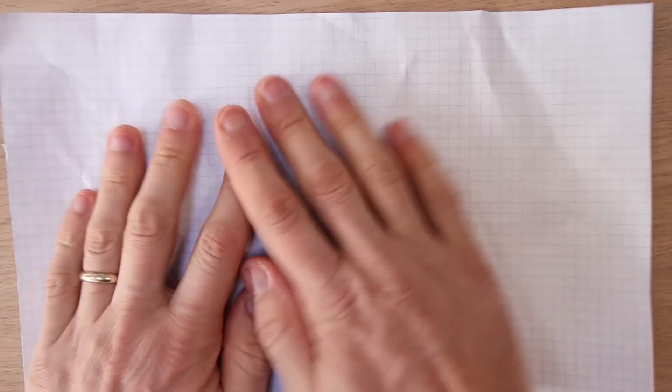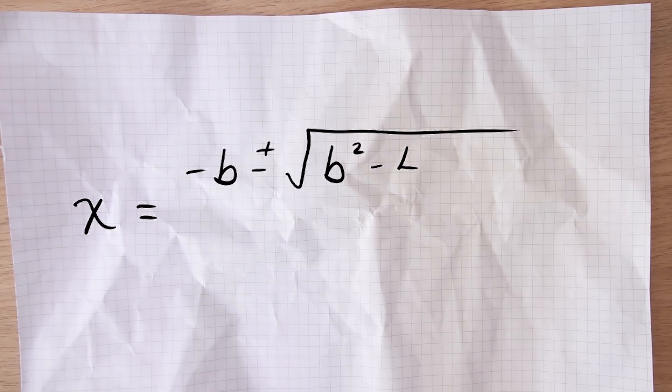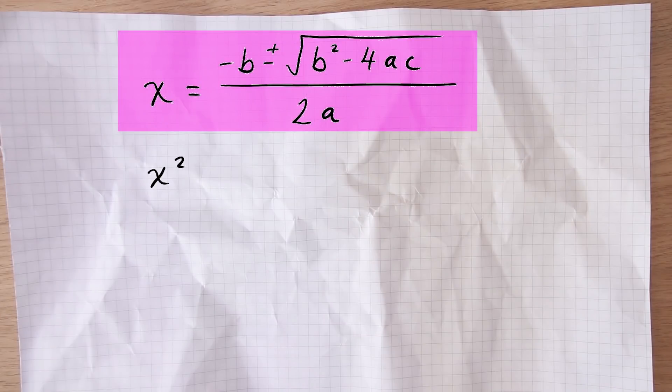The quadratic formula is one of those things that you need to memorize for your maths GCSE exam and it's a formula that lets you solve any quadratic equation. It looks like this: x is equal to negative b plus or minus the square root of b squared minus 4ac, all over 2a. Let's use an example so that I can show you how to use the formula and the places where people often get tripped up. Here's our equation: x squared minus 8x plus 11 equals 0.